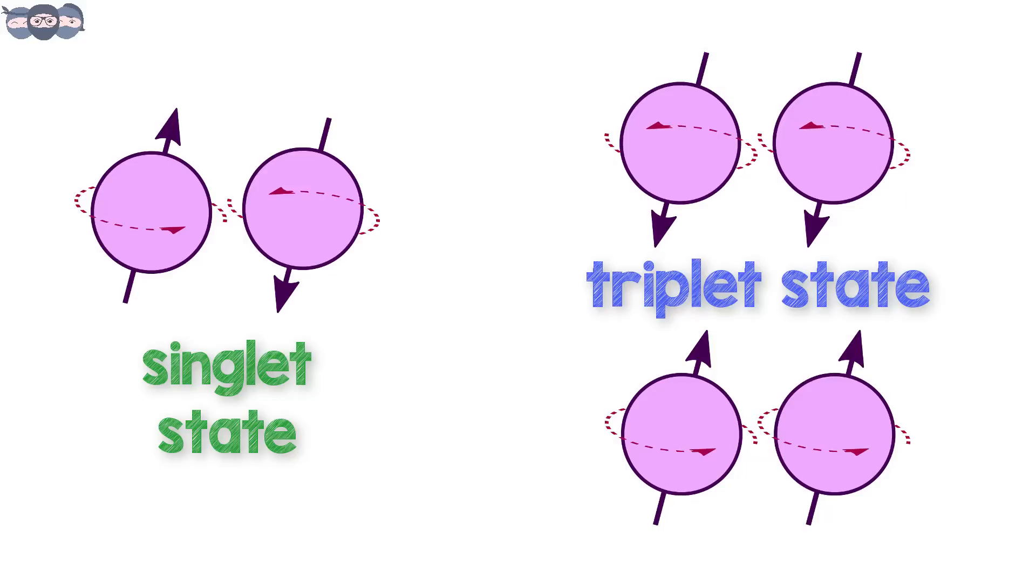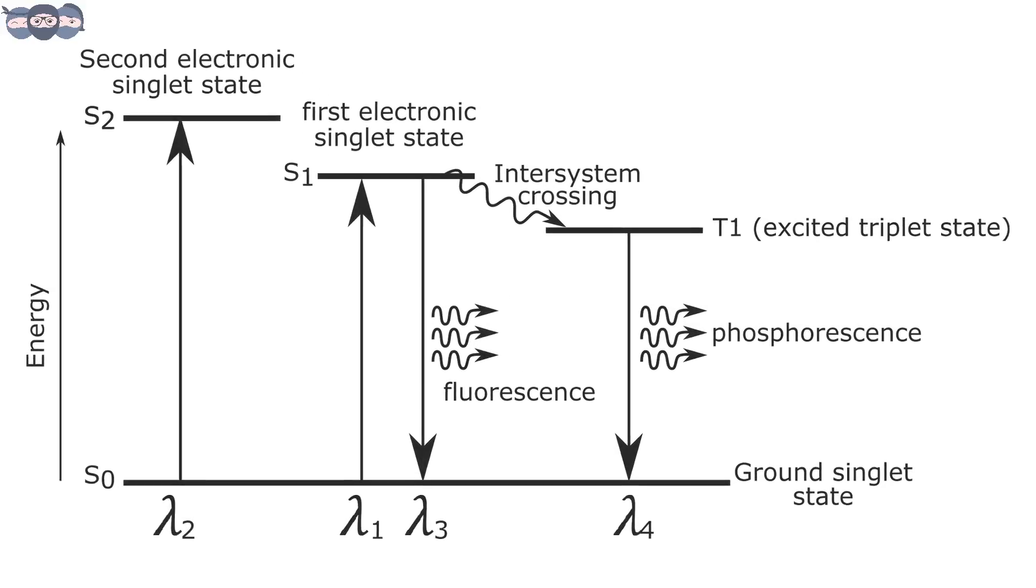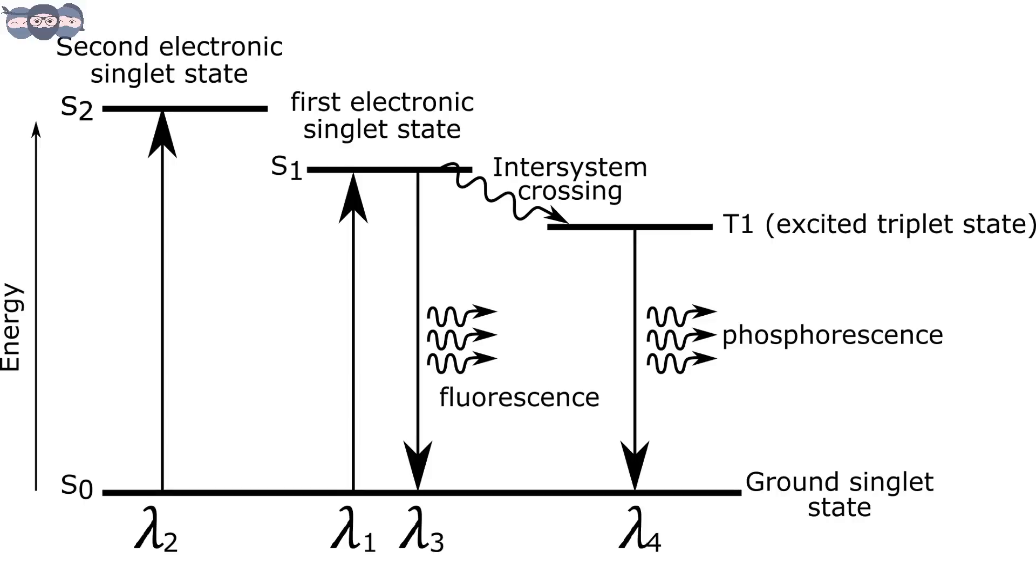Looking at the energy level diagram, we can try to understand how phosphorescence and fluorescence are produced. The energy level diagram helps one understand the production of fluorescence or phosphorescence. As seen in the diagram, there are different energy states.